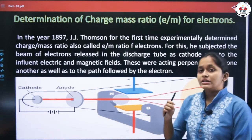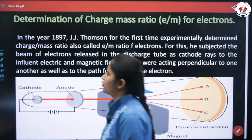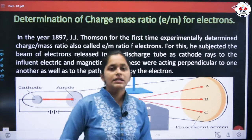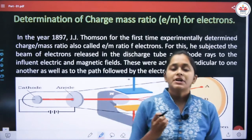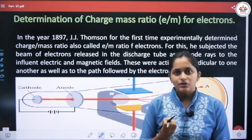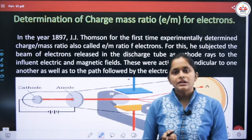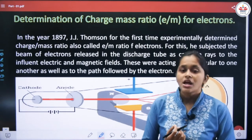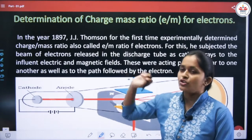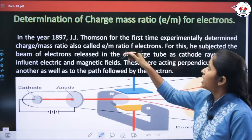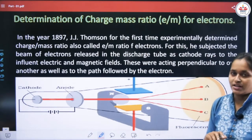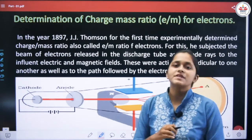The charge to mass ratio of the electron was discovered through experimentation. The electron is negatively charged and has negligible mass. This charge to mass ratio, called the E by M ratio, was determined by J.J. Thomson.